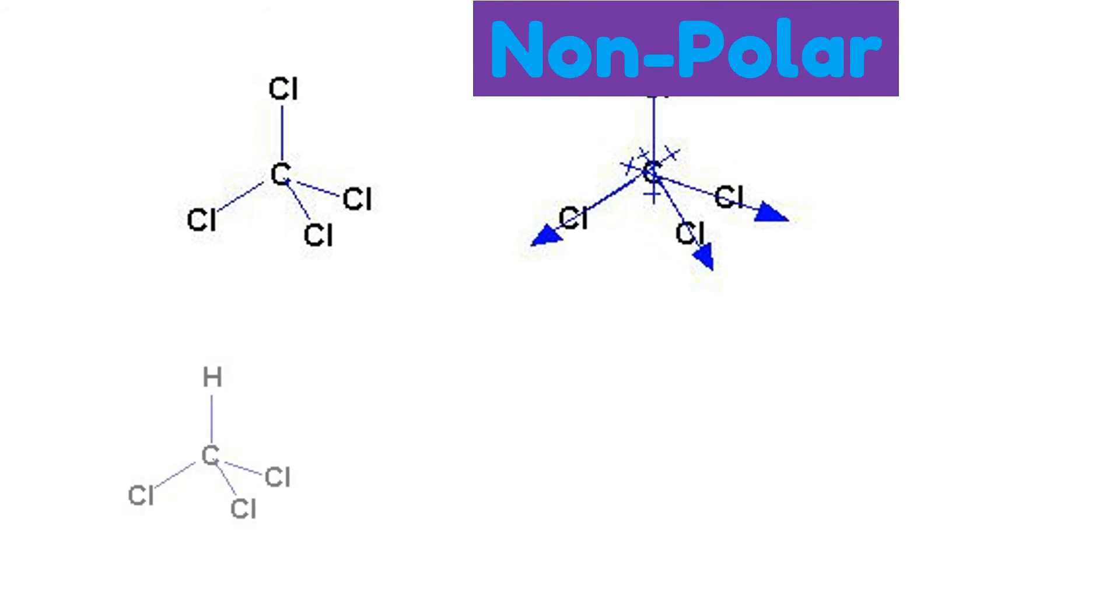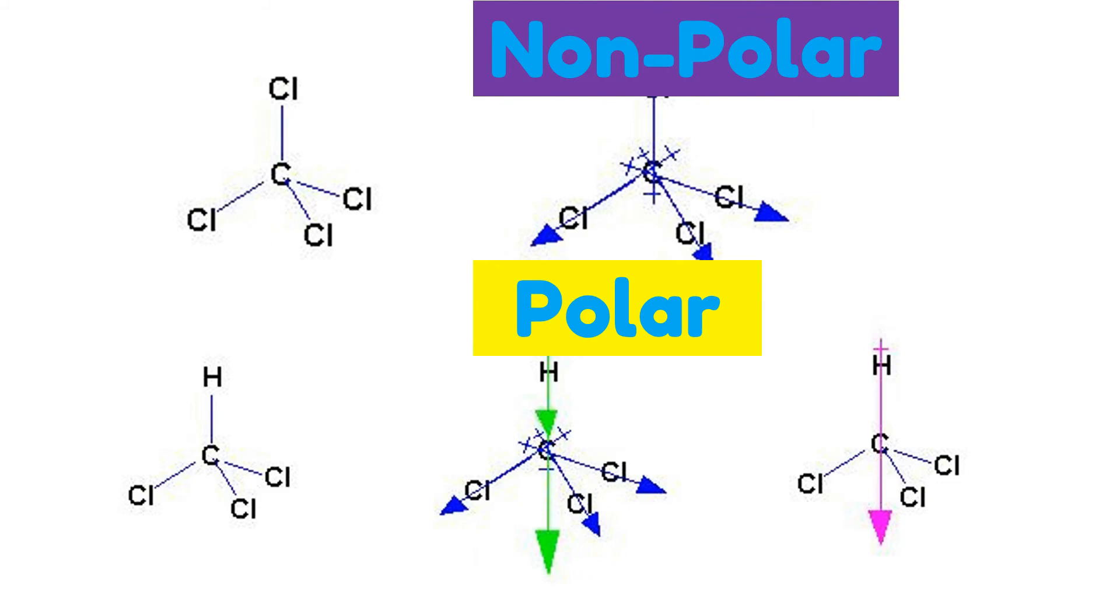How about this? Replacing one chlorine atom with a hydrogen atom? Now remember, hydrogen is less electronegative than carbon. Can you tell the molecular polarity? Yes! It's polar, since they are all headed downward.